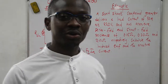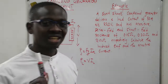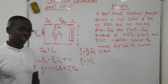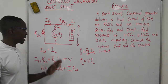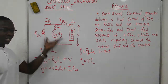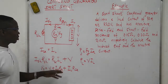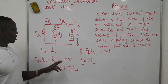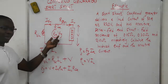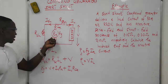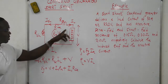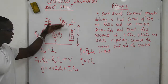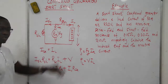In this presentation we are going to discuss a short shunt. A short shunt generator is a generator which has a load, the armature resistance, shunt resistance as well as the series resistance, connected in this manner.